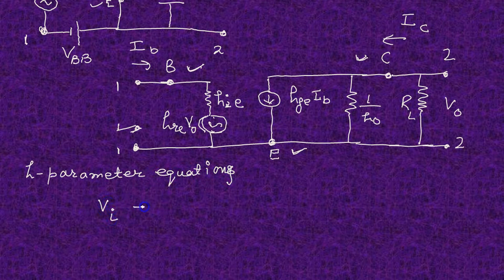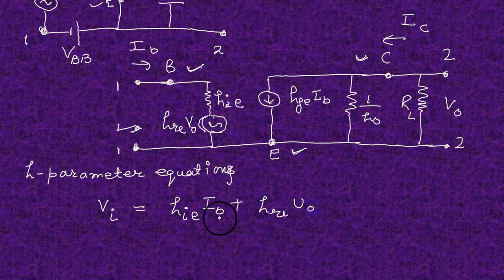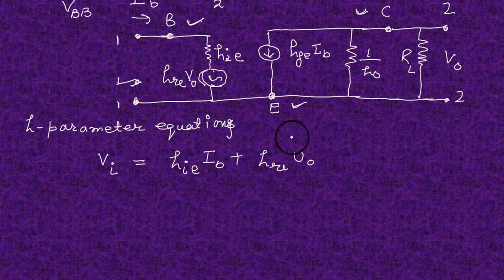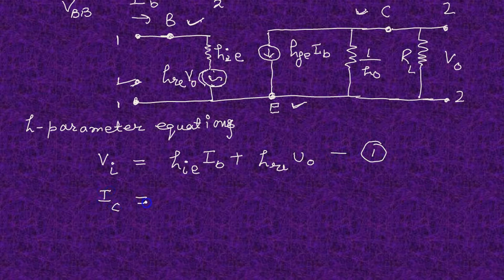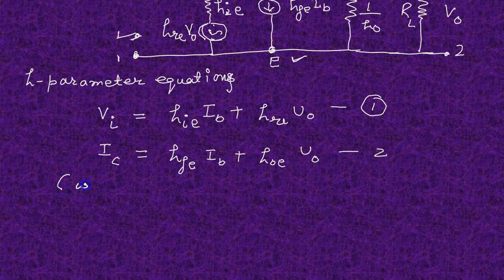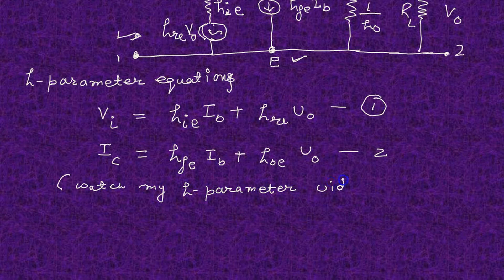Now we know the h-parameter equations. HIE is input impedance, HRE is reverse voltage ratio, HFE is forward current ratio, and HOE is output admittance. For details, watch my previous video on h-parameters.